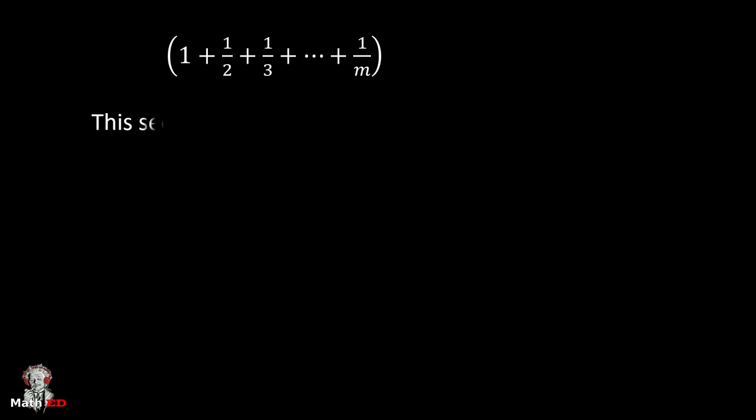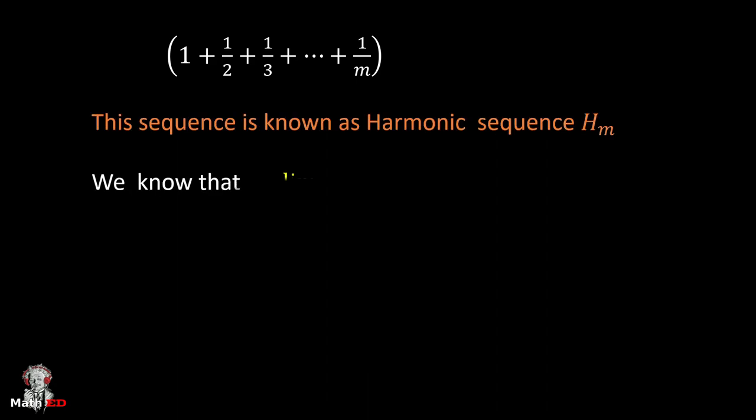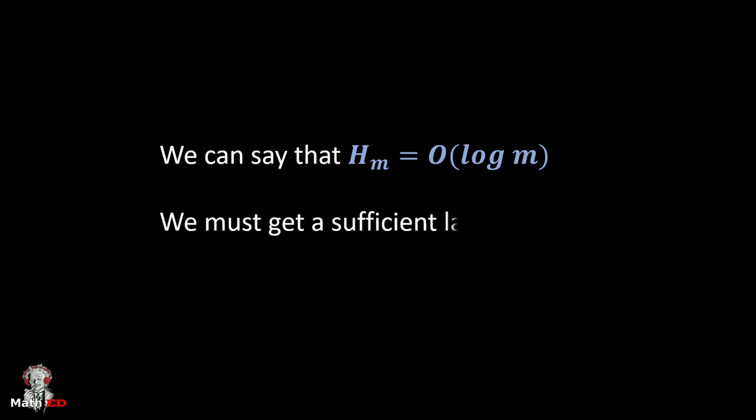This sequence is known as the harmonic sequence. We know if m is large enough, then H(m) is nearly equal to ln(m), or we can say that H(m) = O(ln m), where big O denotes the asymptotic case.